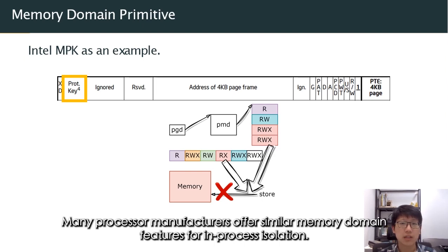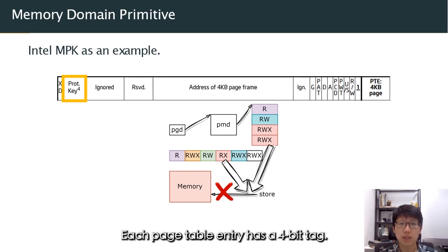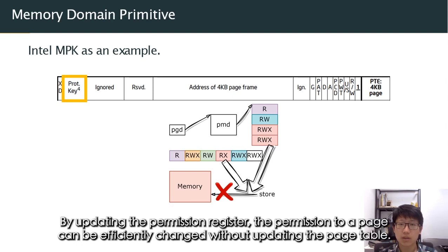Many processor manufacturers offer similar memory domain primitives for in-process isolation. Intel MPK is a representative. Each page table entry has a 4-bit tag. During address translation, the processor uses the 4-bit tag as an index to find the corresponding permission overlay in a newly introduced register called PKRU. By updating the permission register, the permission to a page can be efficiently changed without updating the page tables.